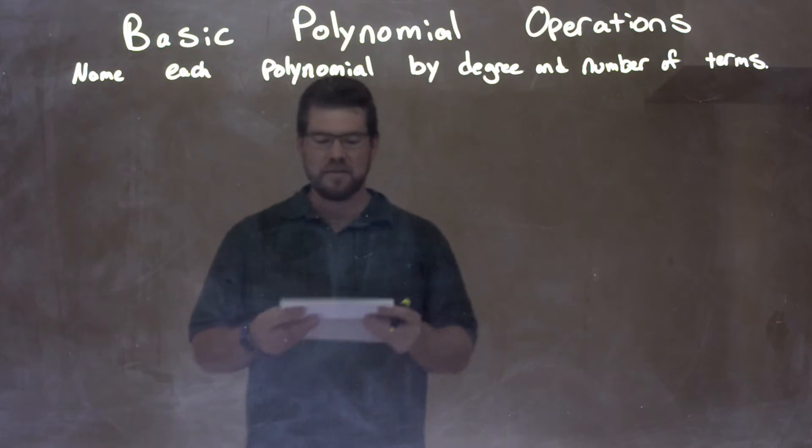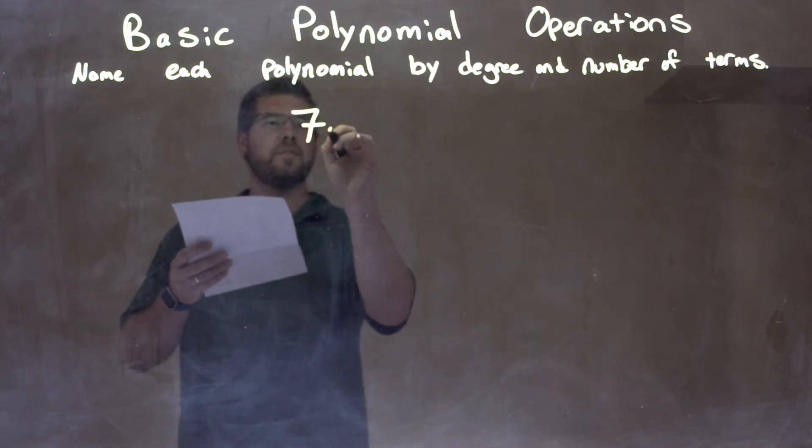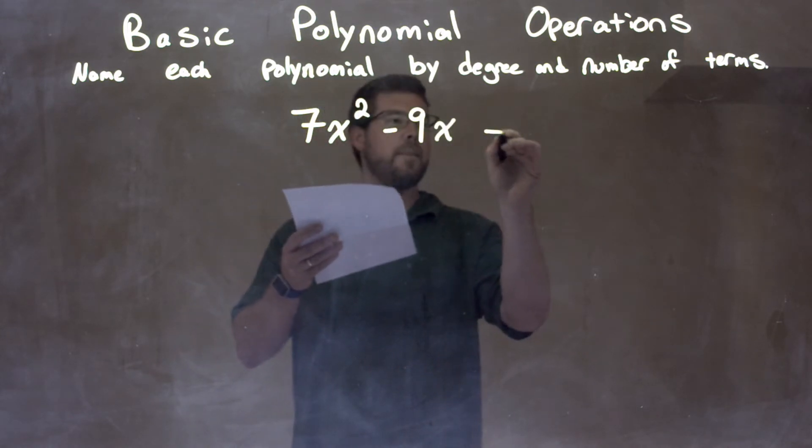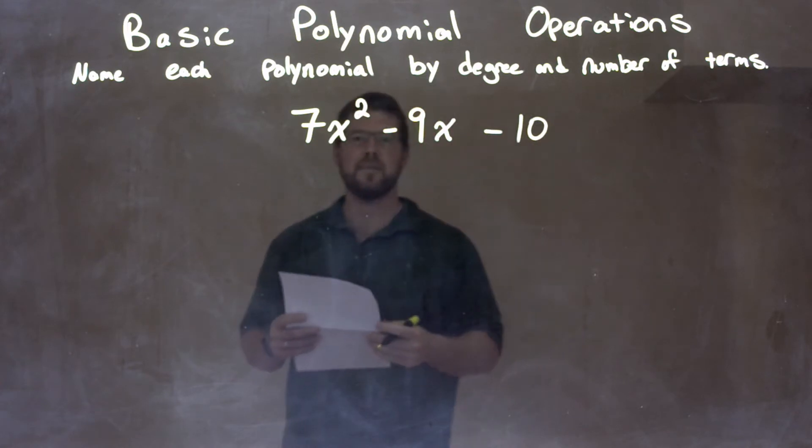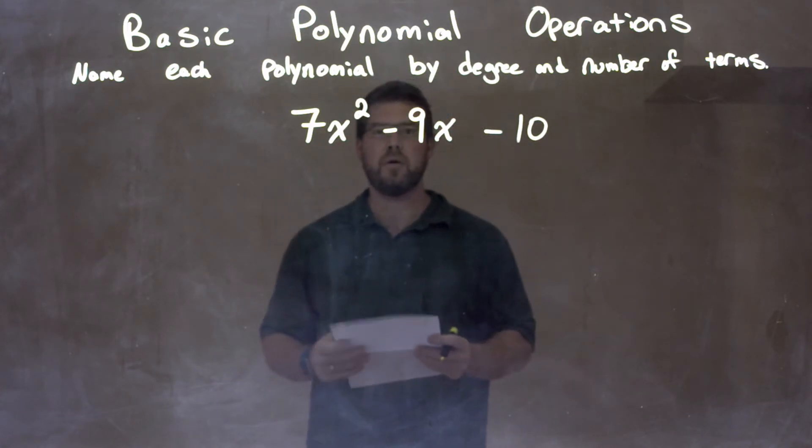So if I was given this polynomial, 7x squared minus 9x minus 10. 7x squared minus 9x minus 10, alright? Well, first thing I'm looking at here is the highest degree.